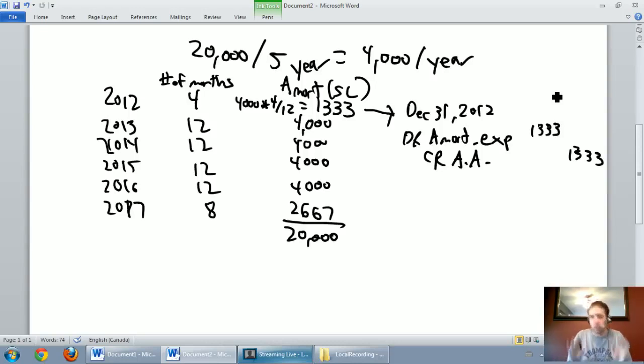As you can see, straight line amortization is very straightforward. The reason it's called straight line is if we have a full year of amortization, as we do in 2013, 2014, 2015, and 2016, when we have a full year of amortization it's always the same. If I were to draw on a graph it looks like a straight line - that's why straight line is called straight line amortization. In the next video we'll talk units of production.